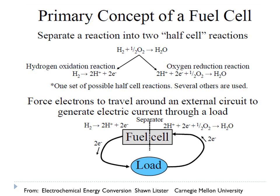Specifically for a fuel cell, the overall reaction is split into two half-cell reactions. At the anode we have hydrogen oxidation, in which hydrogen gets turned into two protons and two electrons. At the cathode we have oxygen reduction, where two protons, two electrons, and an oxygen molecule combine to form water — either liquid or vapor.